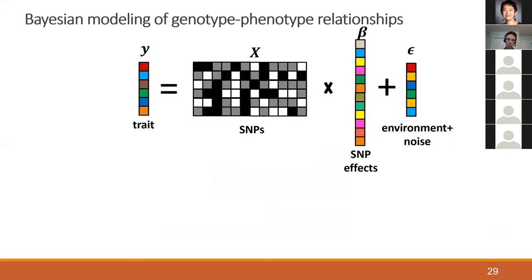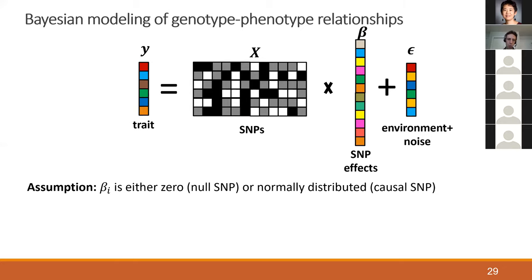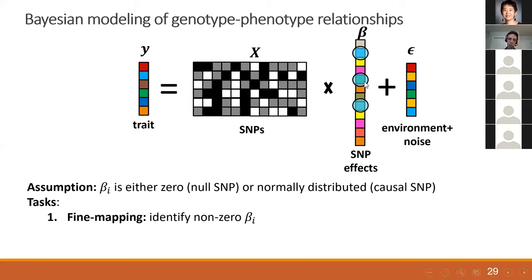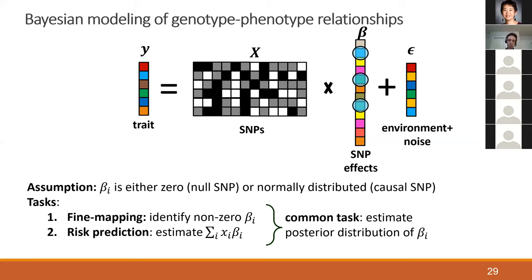In our Bayesian model of genotype-phenotype relationships, each beta_i can be either zero — a null SNP — or normally distributed — a causal SNP. This gives us two tasks: fine mapping, which tries to identify the non-zero beta_i's, and risk prediction, which predicts phenotype from genotype. For both, we estimate the posterior distribution of beta_i, using posterior means. Fine mapping under our model asks: what's the posterior probability that a given beta_i is non-zero?